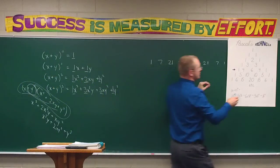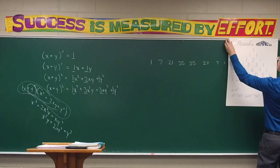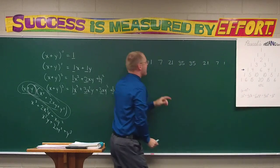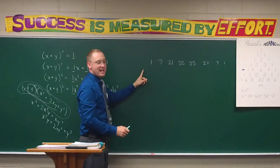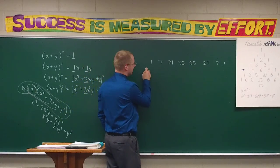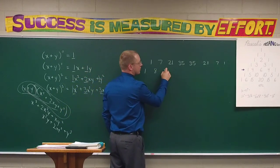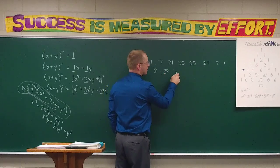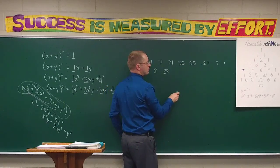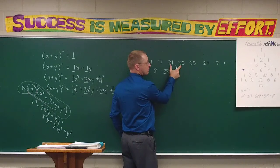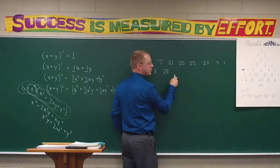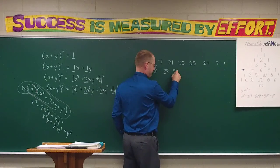Let me slide this down to give myself more room. What would the next line be? One, eight — then adding 7 and 21 gives twenty-eight — then fifty-six. You realize this could go on infinitely, right? Because there's an infinite number of powers you could select for a given binomial.